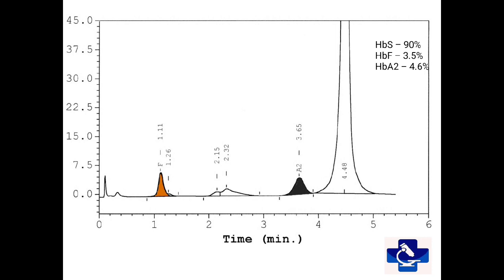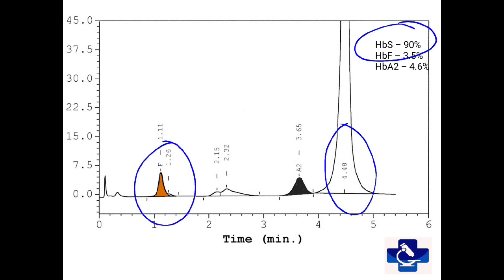In this graph, we have the sickle window of around 90% with a retention time of 4.48. Hemoglobin F is slightly raised. A2 is slightly raised at around 4.6% and HbA0 is near about 2.5%. A0 is actually absent — it is glycated hemoglobin S that falls in this region. This is the case of sickle homozygous or sickle cell anemia.